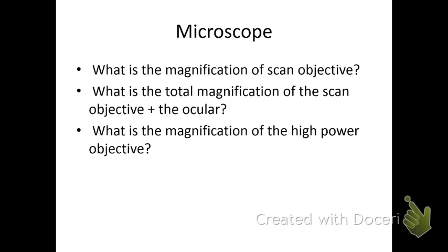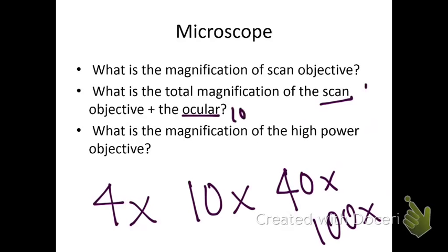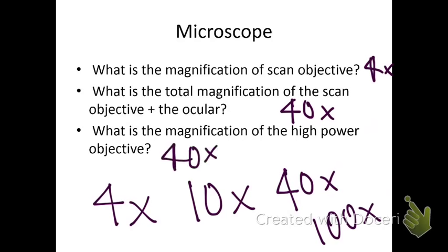What is the magnification of each objective? You need to know all the objectives. Scanning is 4x, low power is 10x, high power is 40x, and oil is 100x. What is the total magnification of scanning? The scanning objective is 4x, times the ocular which is 10x, so the total is 40x. The answer for just the objective was 4x. The magnification of high power alone is also 40x. The ocular is 10, and to get total magnification you always multiply: 10 times whatever objective it is.